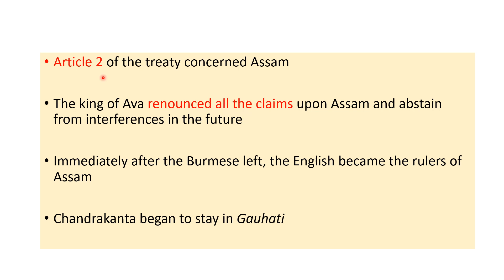Article 2 of the Treaty of Yandabu was concerned with Assam. The King of Ava, or Burma, renounced all claims over Assam, meaning he was no longer interested in Assam and declared that no future king of Burma would have any interest in Assam either.